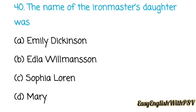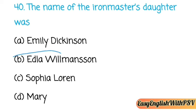Question number forty: The name of the iron master's daughter was — Emily Dickinson, Edla Willmansson, Sophia Lauren, or Mary? We have already discussed this. The correct answer is: Edla Willmansson.